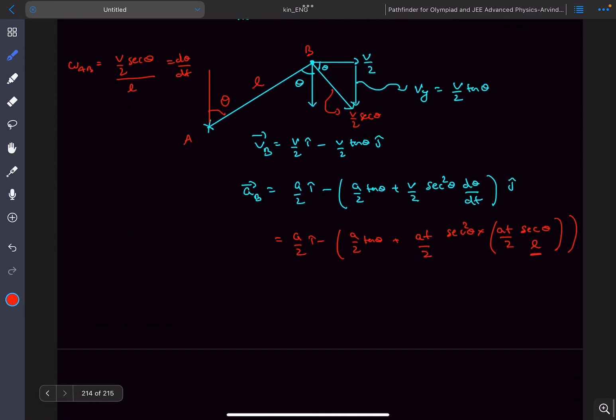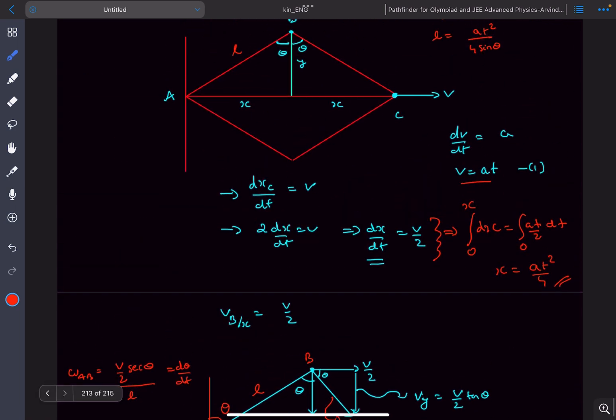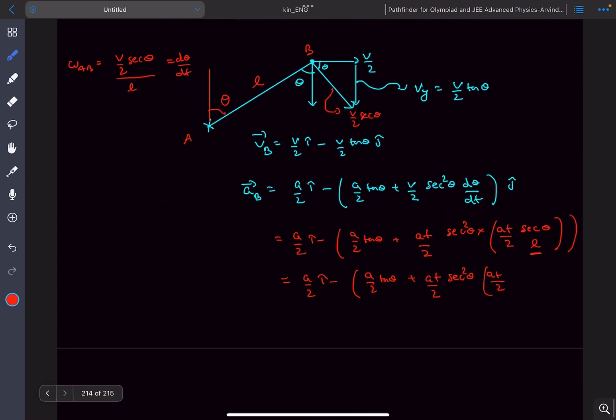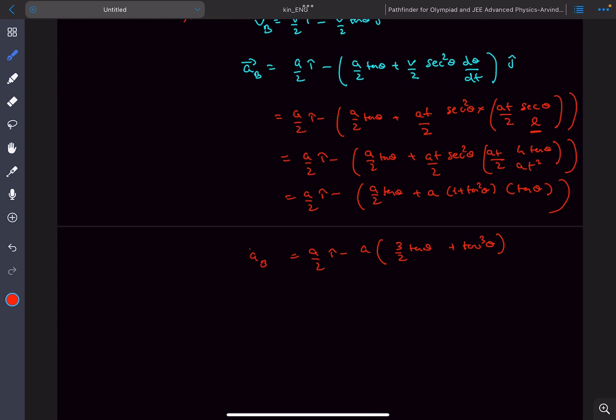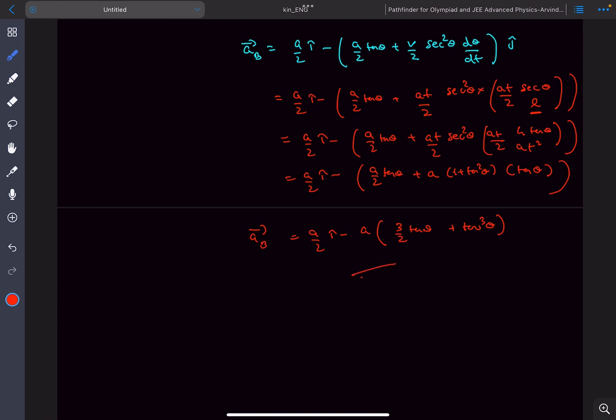Now substituting it back into our equation it will be A by 2 i cap minus, so L is AT squared upon 4 sin theta. After solving and manipulating you finally get the acceleration to be this.